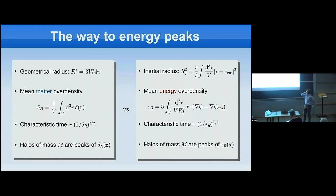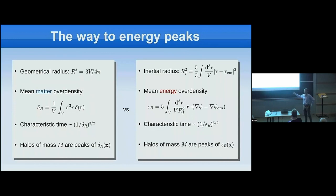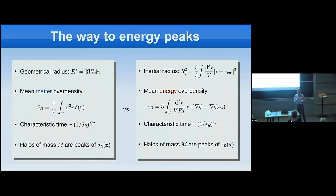What is the energy over-density? In BBKS-style calculations, the main quantity is the geometrical radius of your patch — the quantity whose cube gives the volume — and it is related to the mean matter over-density ΔR, the average of the over-density δ over the volume. They are dynamically related because δ sets the evolution for R: the characteristic collapse time of the geometric radius scales as 1/(Δ^{3/2}), so denser patches decouple from the Hubble flow and collapse faster.